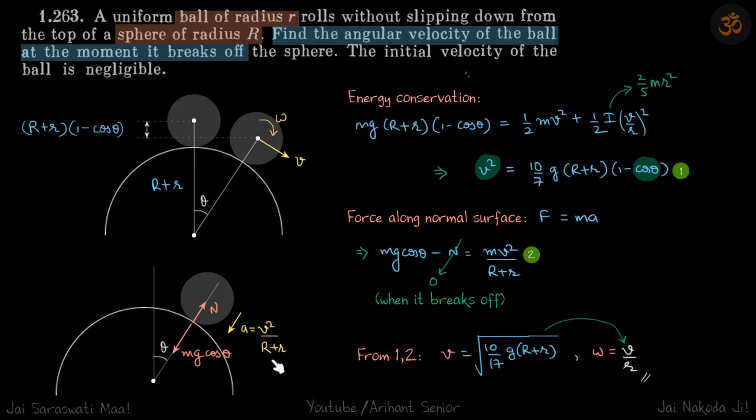But at the time it breaks off, N becomes zero, so that is our equation. So force along normal surface F = ma, or mg cos θ - N = mv²/(R+r), and when it breaks off, N becomes zero.